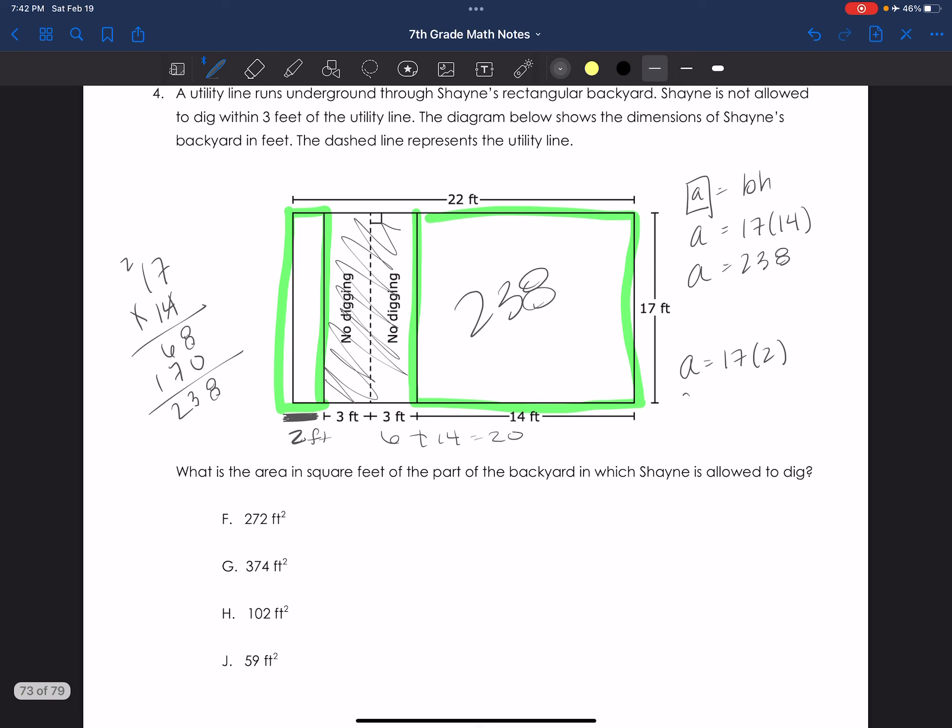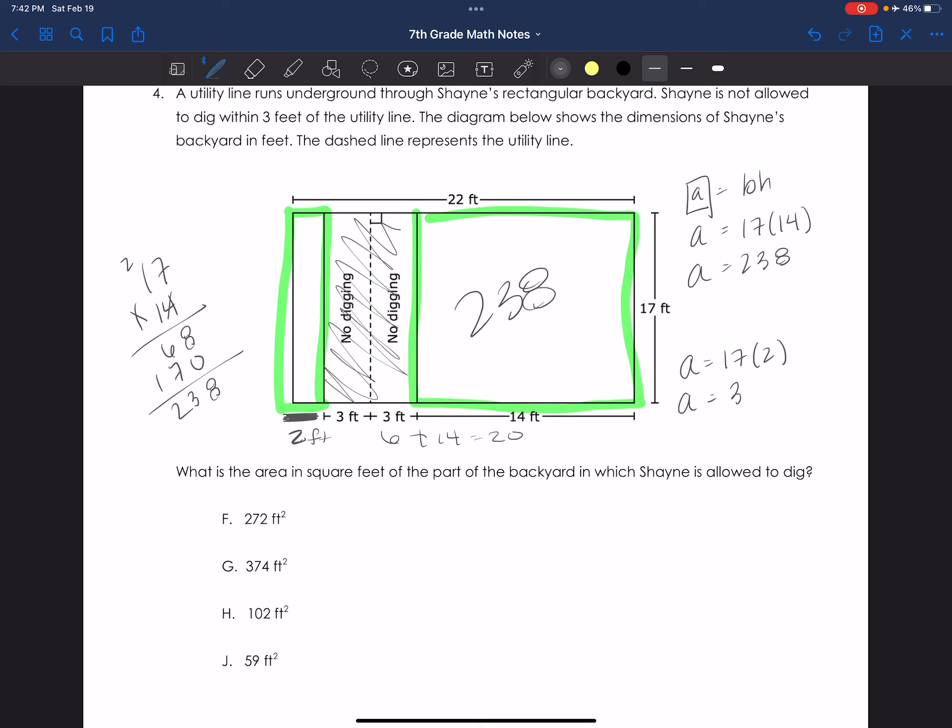And then I do know what 17 times 2 is off the top of my head. It's 34. So then this guy is 34. Now I would add those two together. And it looks like I got answer choice F.